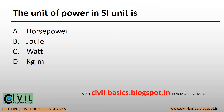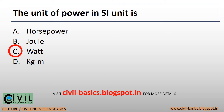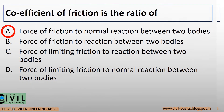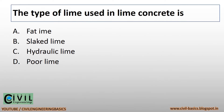The unit of power in SI unit is what? Coefficient of friction is the ratio of force of friction to normal reaction between two bodies. The type of lime used in lime concrete is slaked lime.